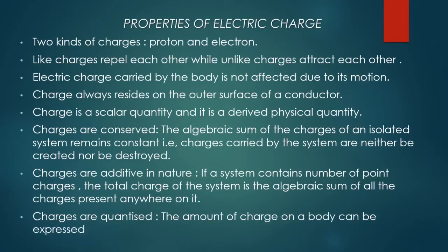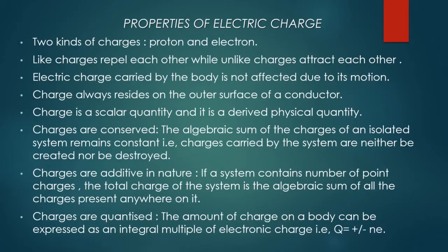Charges are quantized: the amount of charge on a body can be expressed as an integral multiple of electronic charge — q = ±ne — where q is charge, e is the electronic charge, and n is an integral multiple (1, 2, 3, 4...). So the amount of charge on a body can only be expressed as an integral multiple of the electronic charge.